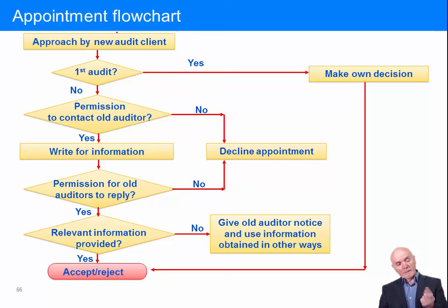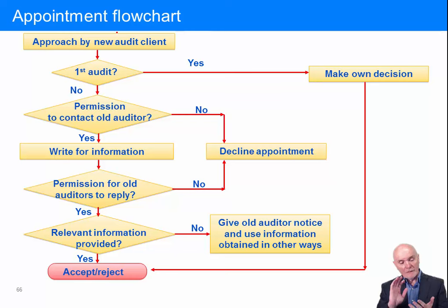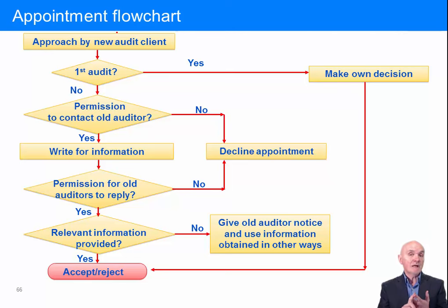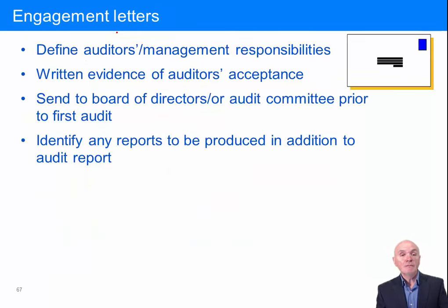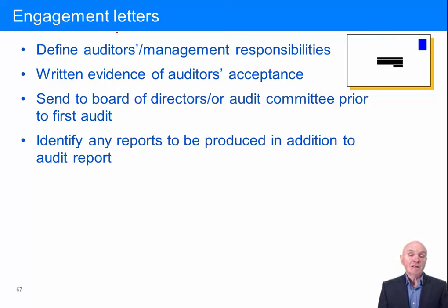What you hope for is that the relevant information will be provided — that the old auditor will write back and say there is no particular reason why we're resigning, we have no particular suspicions, and we've had no particular difficulty with the client. That's pretty much a green light for you to go. If they don't write back, or you think they're using slightly cagey words, then you might get worried and have to work harder to find that missing information in other ways. Once we've gone through the process and got no worrying signs from the outgoing auditor, the next thing we do is to send out an engagement letter.